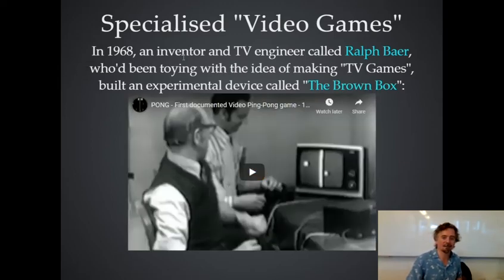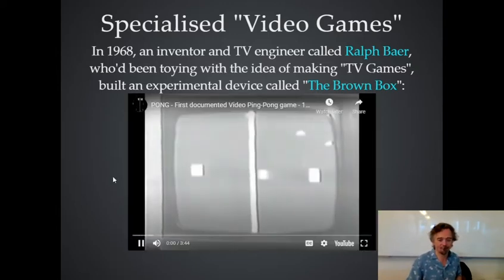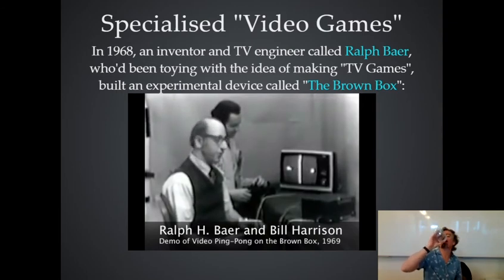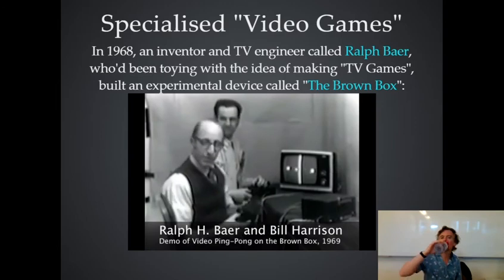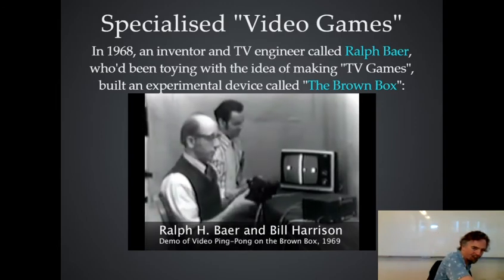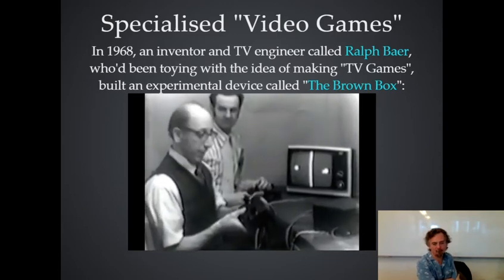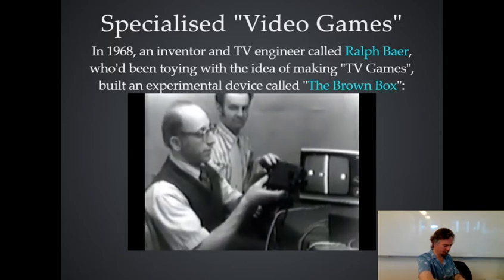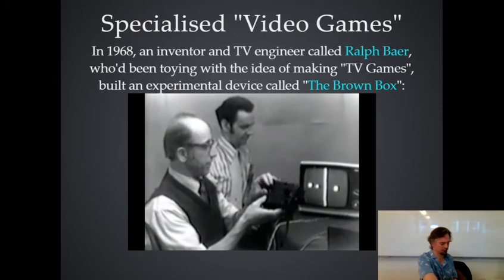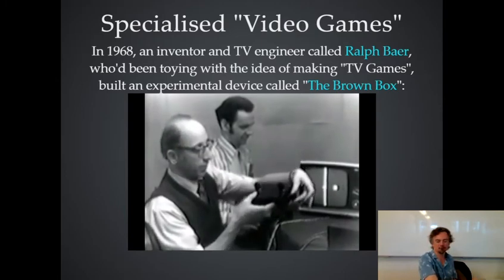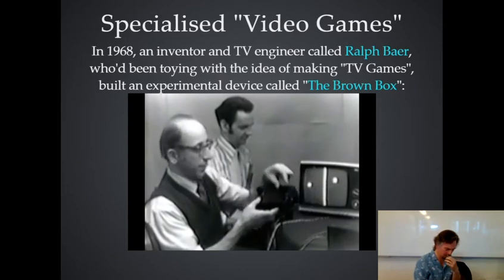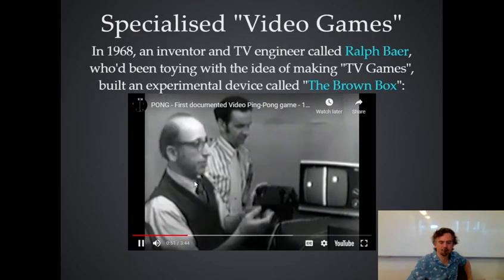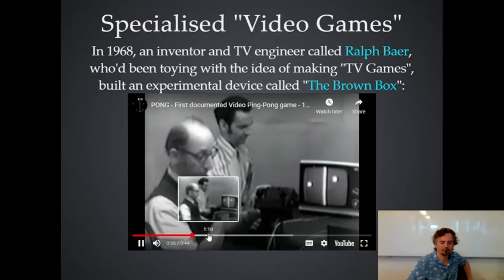Here he is in 1968 demonstrating a game you might recognise. He says: 'Here we are playing ping-pong where we ought to be working. Here's our ball rolling back and forth.' He explains the controls: a horizontal knob that moves the paddle left to right, a vertical control that moves it up and down, and finally an English knob which allows you to put curves on the ball and control the vertical position as it leaves your paddle.